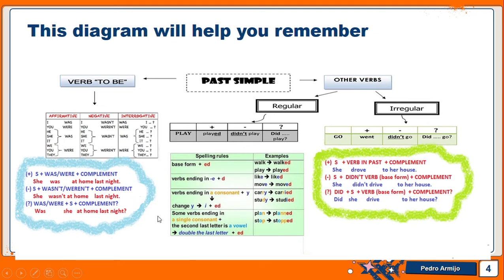With verbs that end in a single consonant, and before that consonant there is a vowel (a, e, i, o, u), what I have to do is double the last consonant letter and then add '-ed.' For example, 'plan' has a vowel followed by a single consonant, so I double the consonant and add '-ed' to get 'planned.' Similarly, 'stop' has the vowel 'o' followed by the consonant 'p,' so it becomes 'stopped' — double the consonant and add '-ed.'